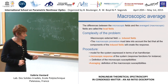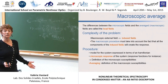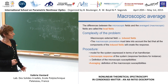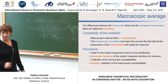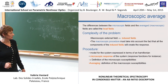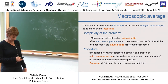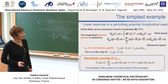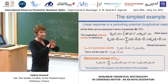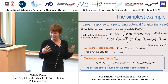How do we do that? The first step is to model our system in terms of a Hamiltonian. Then we calculate the microscopic response of the system. And then we average our microscopic quantities.